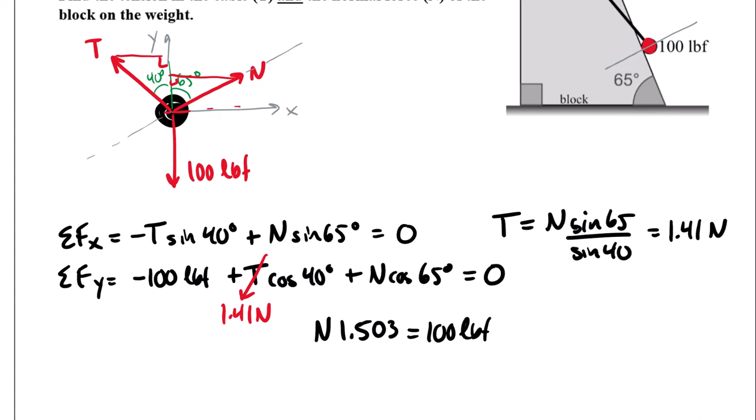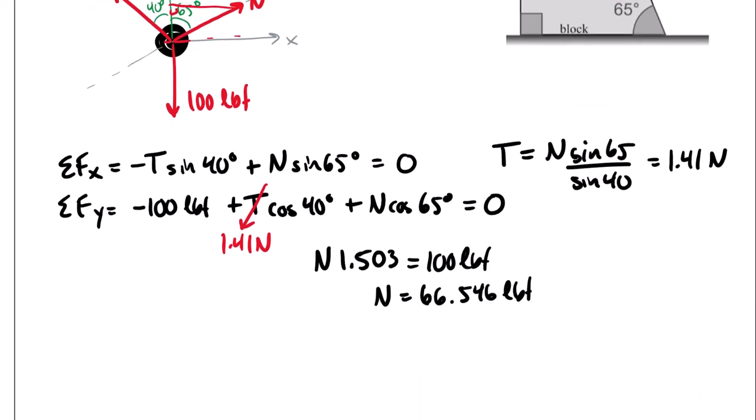So 1.503 times N is equal to 100 pound force. Therefore N is equal to 100 divided by that fraction. Dividing out that fraction with the 1.51, we end up with 66.546 pound force. And then we could take that N times our original 1.41 from the ratio above there and end up with a tension force T equal to 93.828 pound force. And then I take these answers and put them into the boxes below. I'll just leave it here on the screen for this case so we can see all the work.